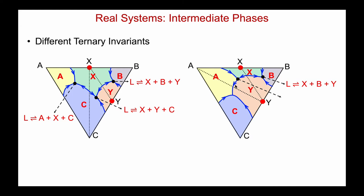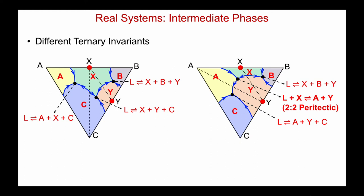Now let's take a look at this next one carefully. Look at the directions of the arrows: two coming in, one coming out. This is no longer a ternary eutectic — it's a peritectic. Two in, one out — that's a 2-2 peritectic. It's liquid plus the primary phase field between the two incoming valleys, which is X. So it's liquid plus X in equilibrium with the two exiting primary phase fields: A plus Y. L plus X in equilibrium with A plus Y. And the last one is easy to identify — it's a ternary eutectic: liquid in equilibrium with A plus Y plus C.